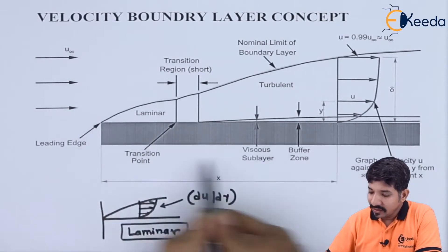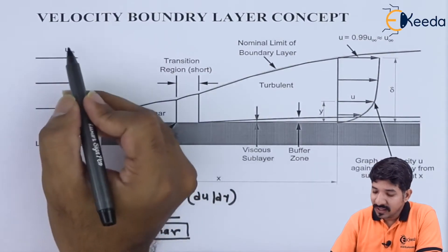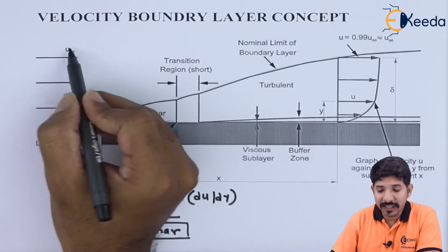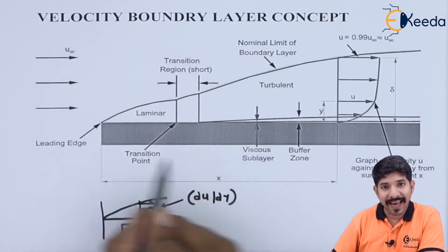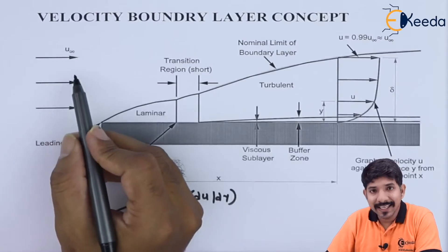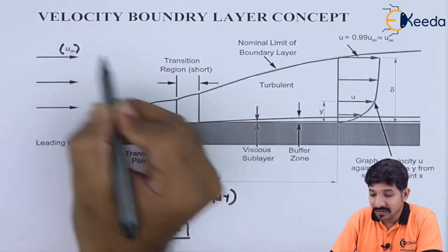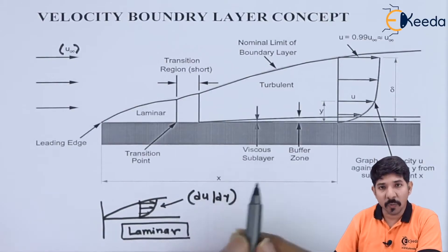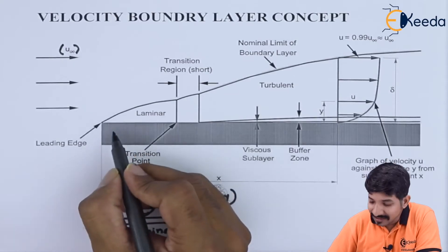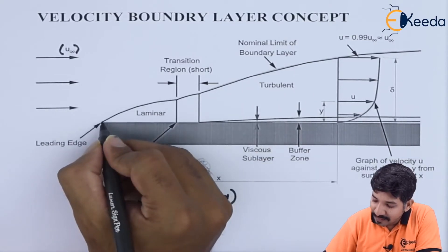Consider a plate which is kept in a stream flow. The velocity of the stream flow is let us say u infinity. Now what will happen as the stream flow approaches this plate — initially the velocity was u infinity, but since it is obstructed by the plate, the velocity very near to the first layer of the plate will be zero.